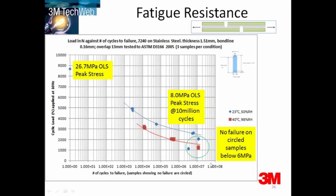However, no failure on cyclic samples below 6 MPa was observed. So this is great design data. It starts off at a very high strength, but even after a lot of cyclic loading, you still have a reasonable amount of strength left. If you choose the right adhesive and factor this in, you can have an effectively durable joint over a long period of time.